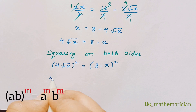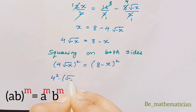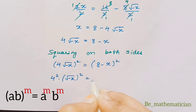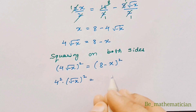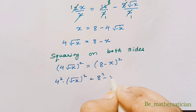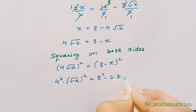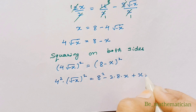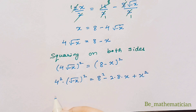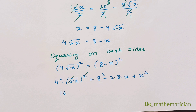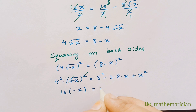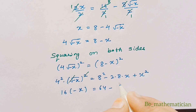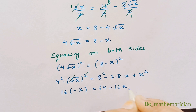Using the power of product rule, the left side becomes 4² · (√(-x))² = 16·(-x). The right side is in the form (a - b)², so it becomes 8² - 2·8·x + x² = 64 - 16x + x². So we have -16x = 64 - 16x + x².